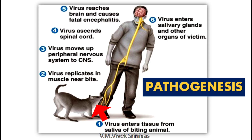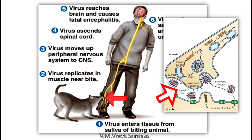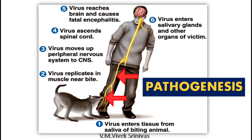Pathogenesis. The virus first enters the tissue from saliva of the biting animal. Then the virus does its initial replication in the muscle tissue near the bite. Following replication, the virus binds to the acetylcholine receptors in the nearby nerves with the help of surface glycoprotein G spikes. Then the virus moves up through the peripheral nervous system to the central nervous system, ascends through the spinal cord to reach the brain where it causes fatal encephalitis. After its replication in the brain, the virus moves to the salivary gland and is excreted through the saliva.